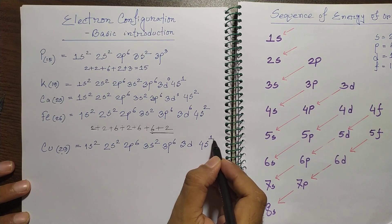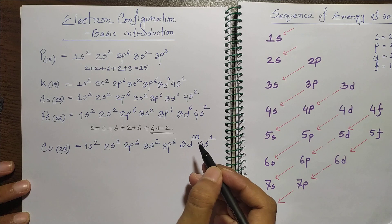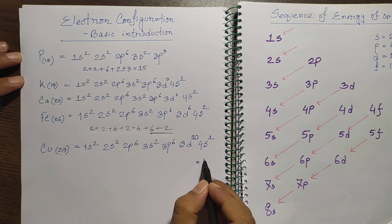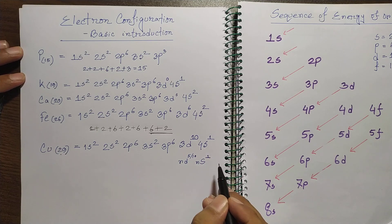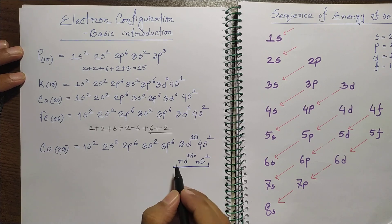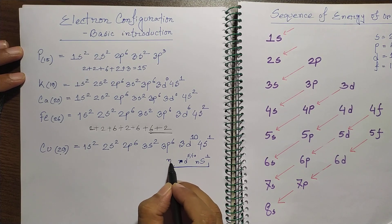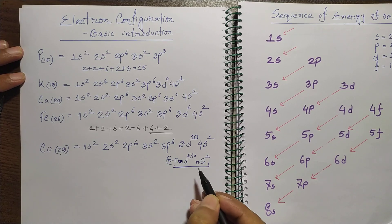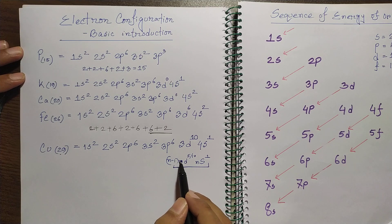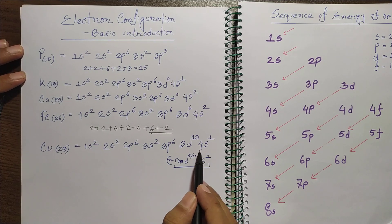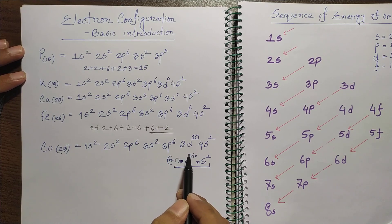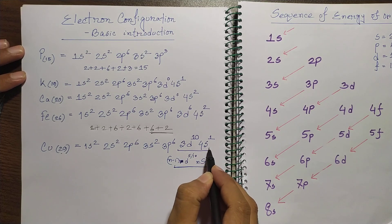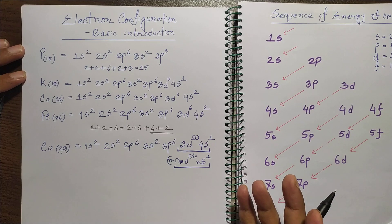For copper, when the (n-1)d orbital can be made 5 or 10 (fully or half-filled), we put only 1 electron in the ns orbital instead of 2. So 4s2 and 3d9 is not stable. Instead, copper's configuration is 3d10 and 4s1, because a completely filled d orbital (d10) gives extra stability. So remember: copper is 3d10, 4s1.